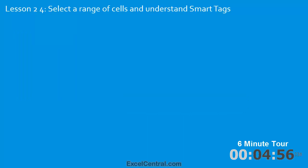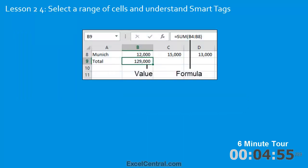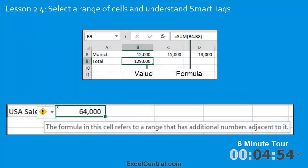In the fourth lesson you'll discover Smart Tags. In this case the Smart Tag is advising that it thinks you may have made a mistake in the formula that's entered in the cell.